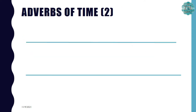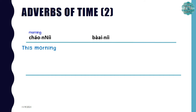Now let's learn adverbs of time, set 2. The first one is เช้านี้. เช้า means 'morning' and นี้ means 'this,' so เช้านี้ means 'this morning.' The next one is บ่ายนี้. Can you remember what บ่าย means from the previous chapter? It means 'afternoon,' so บ่ายนี้ means 'this afternoon.'